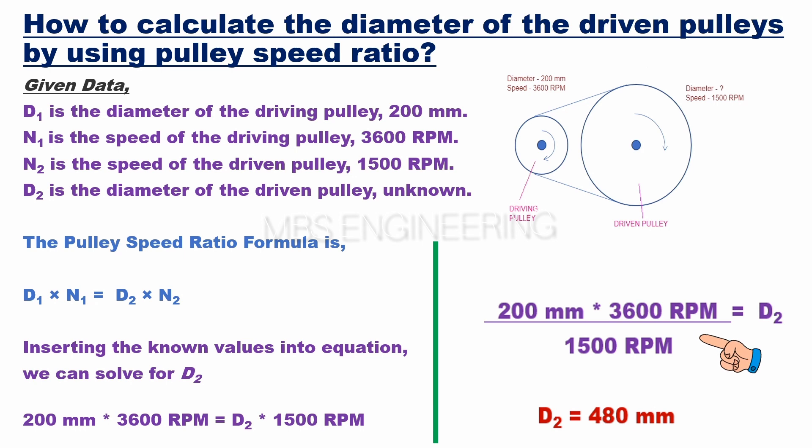Solving for D2, we get D2 equals 200 mm multiplied by 3600 RPM, obtained value divided by 1500 RPM, then D2 equals 480 mm.